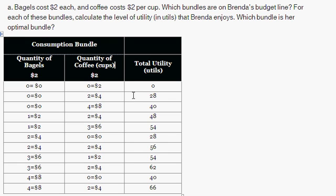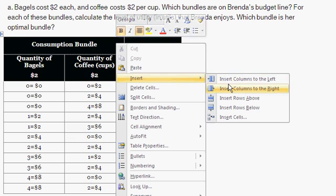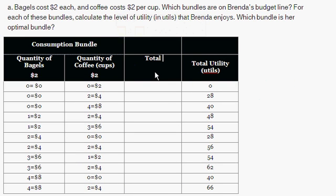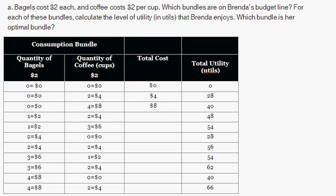Now I'm going to add in another column — total cost. So the total cost of 0 bagels and 0 cups of coffee is $0. The total cost of 0 bagels and 2 cups of coffee is $4. Total cost of 1 bagel and 2 cups of coffee is $6. 1 bagel and 3 cups of coffee is $8. 2 bagels and 0 cups of coffee is $4. 2 bagels and 2 cups of coffee is $8. 3 bagels and 1 cup of coffee is $8. 3 bagels and 2 cups of coffee is $10.